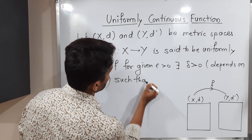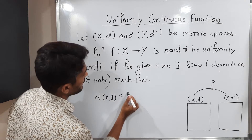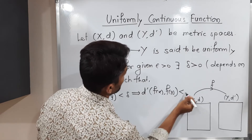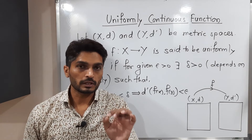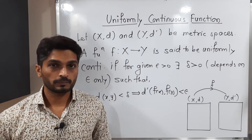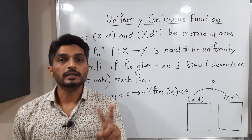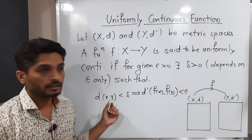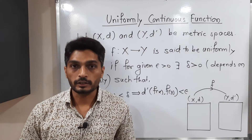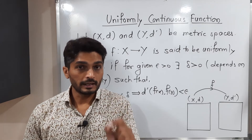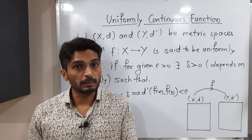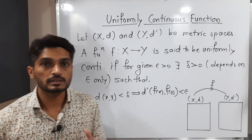The definition requires: d(x, y) less than delta implies d'(f(x), f(y)) less than epsilon. In the case of a continuous function, when we check continuity at a particular point x-naught, both x and the function value are fixed. But here, both points x and y can vary. This delta depending on epsilon only is the main difference between uniform continuity and regular continuity. In continuity, delta depends on epsilon as well as the point x-naught, but in uniform continuity, delta depends on epsilon only.